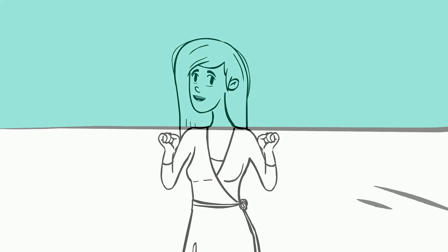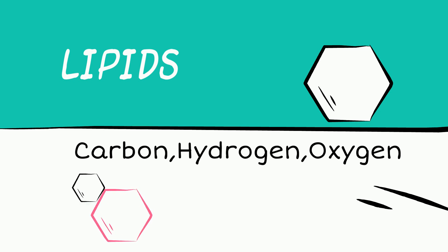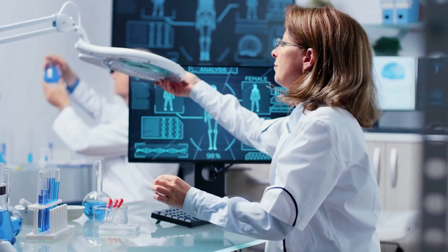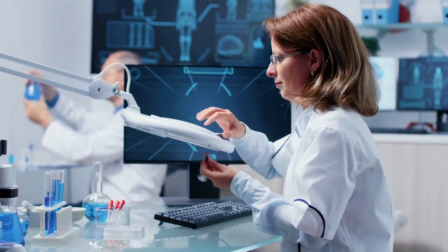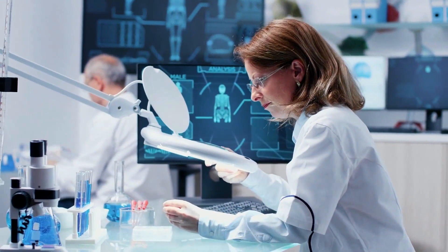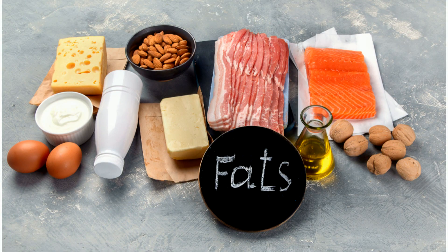Most lipids are molecules composed of carbon, hydrogen, and oxygen. Some of them also contain nitrogen and phosphorus. Technically, a lipid is not a macromolecule, but in biochemistry it is grouped with them. Lipids are fats, waxes, phospholipids, and steroids. Lipids help make cell membranes and are great at storing energy.